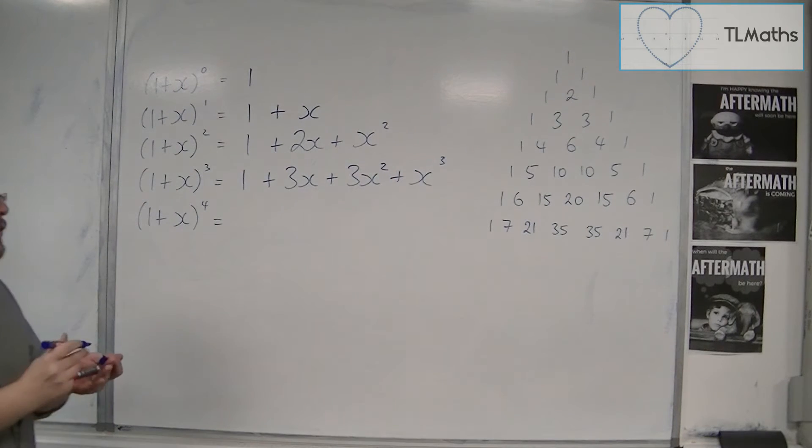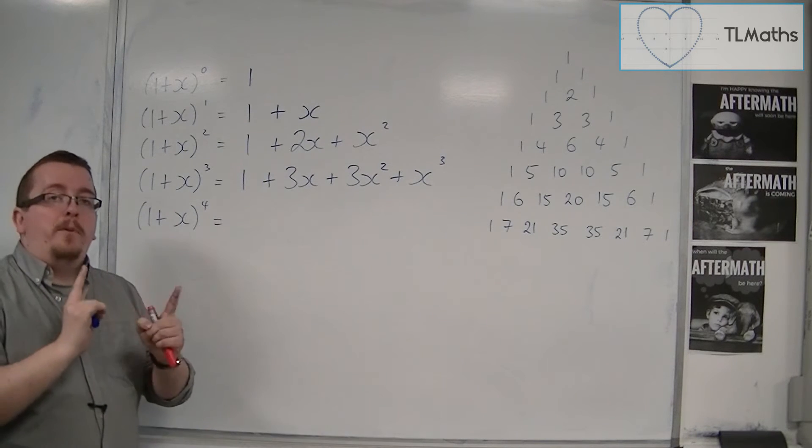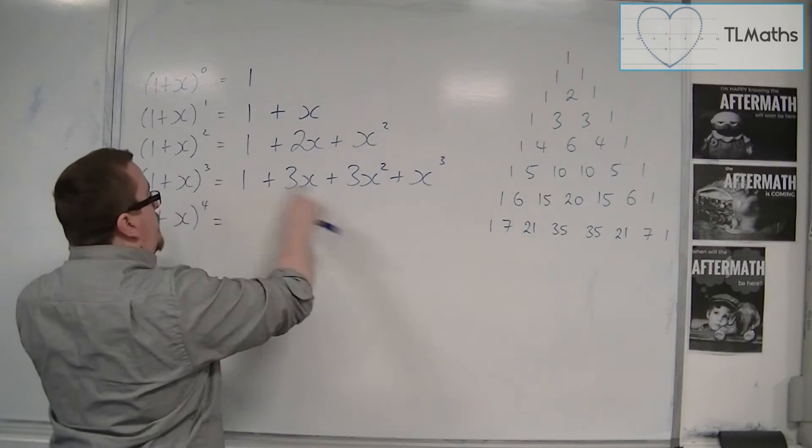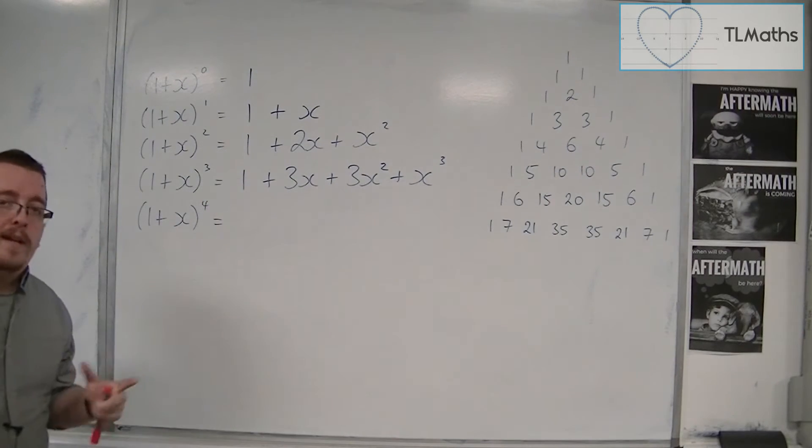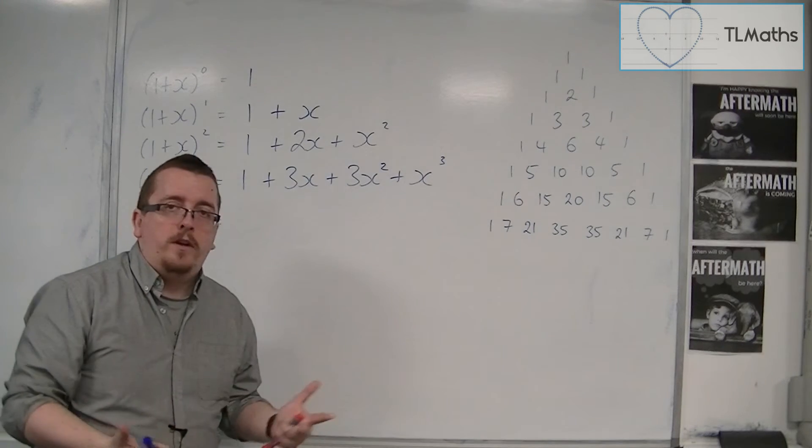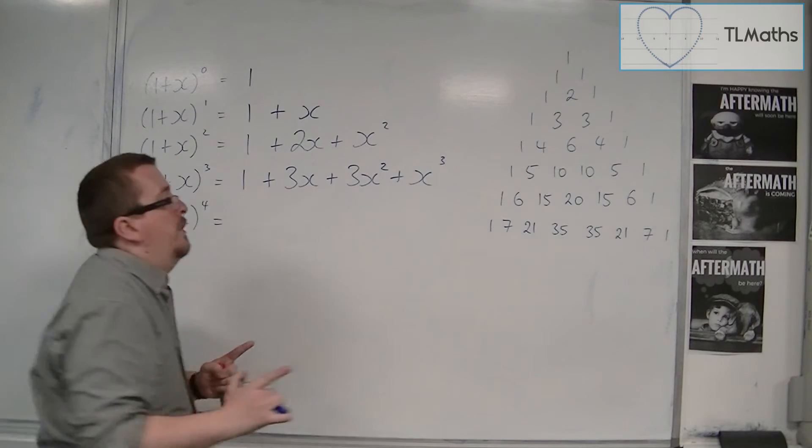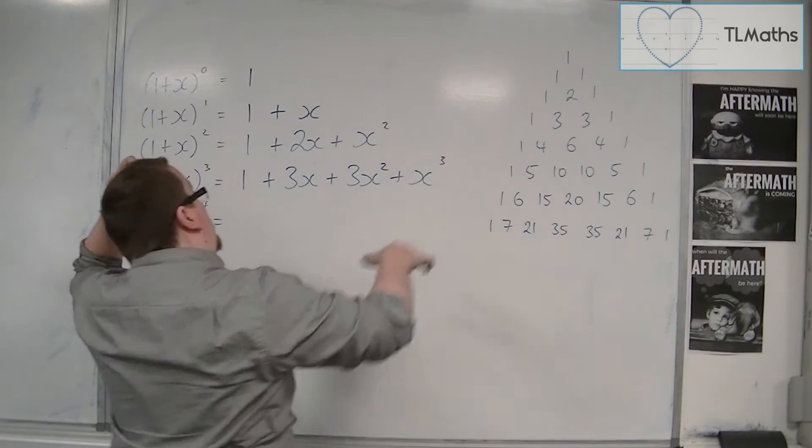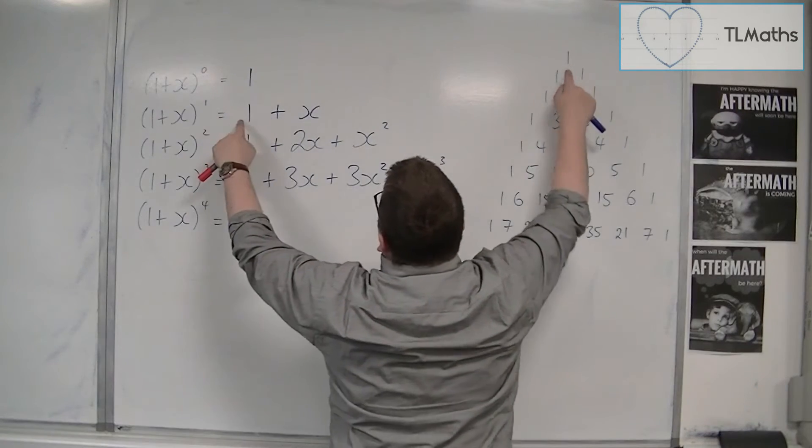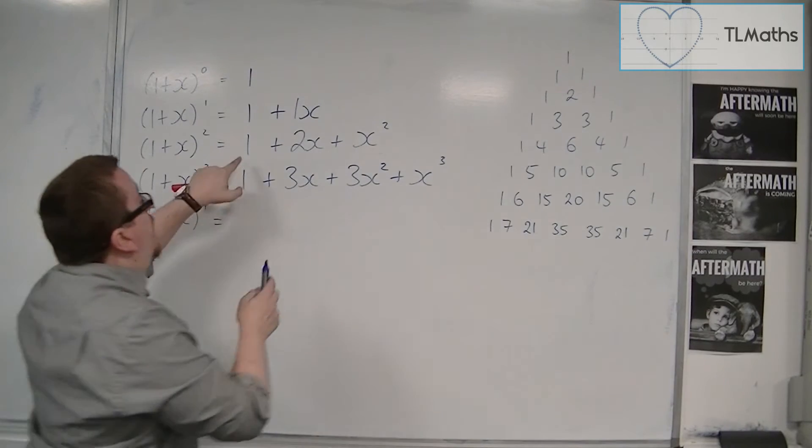And 1 plus x cubed would expand to 1 plus 3x plus 3x squared plus x cubed. Now it is important here to start to notice where these numbers are coming from. Because expanding three brackets like that, that quickly, seems quite strange, that you'd be able to do that. But where I'm getting this from is the numbers in Pascal's triangle. Because we have this 1. Then you have 1, 1. So it's effectively 1 plus 1x. Then you have 1, 2, 1.